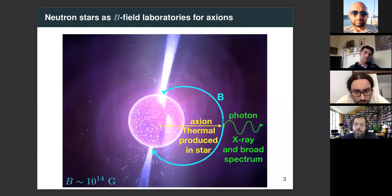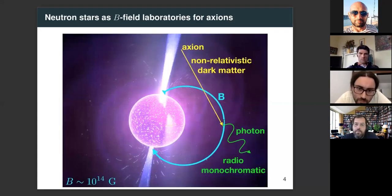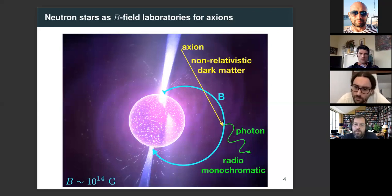There are two different sources of axions that could interact with the magnetic field. The more straightforward version: axions produced within the star itself from the thermal plasma in the core at ~10 keV, leaving due to weak interactions and converting into photons in the external magnetic field, producing a broad thermal spectrum. Another source is dark matter axions — if axions make up a fraction of dark matter, they fall toward the neutron star due to gravity, convert into photons in the radio band, and are roughly monochromatic since the axion is non-relativistic. The signal frequency is set by the axion mass.